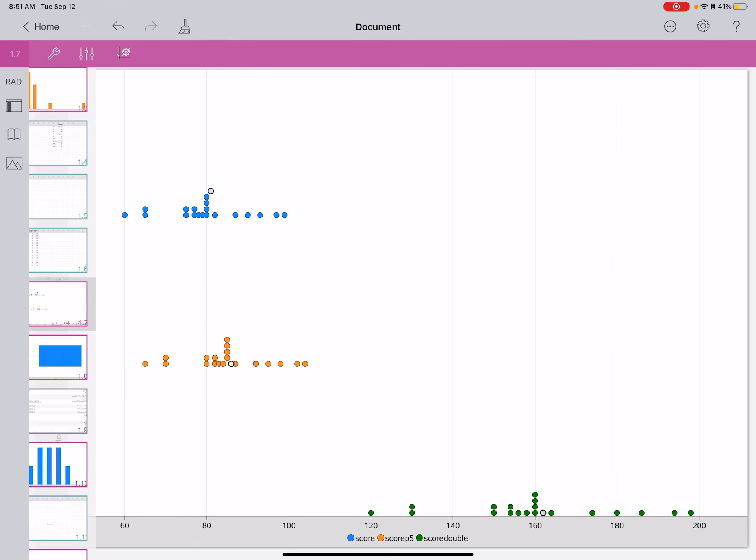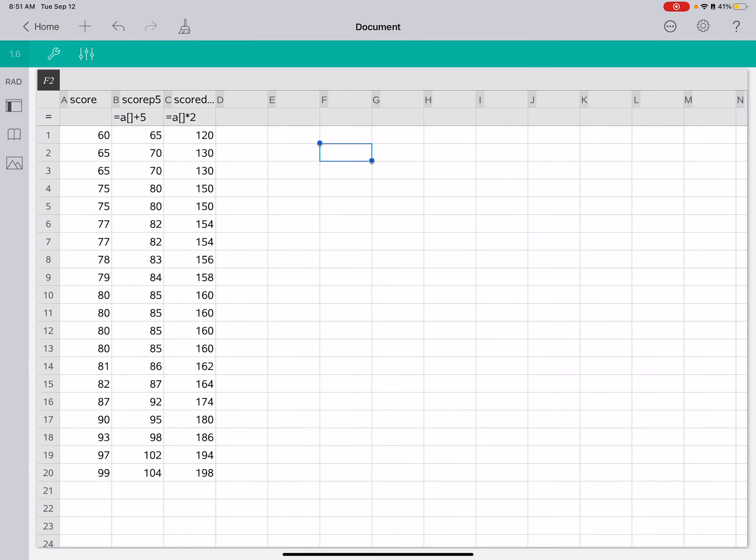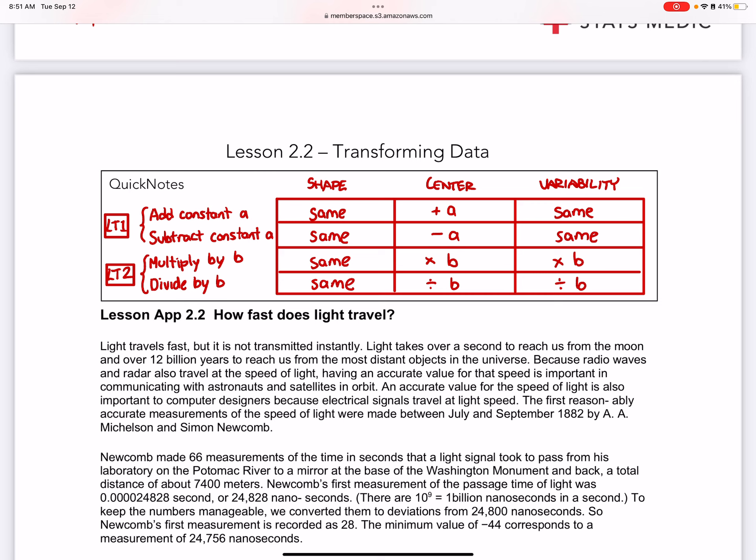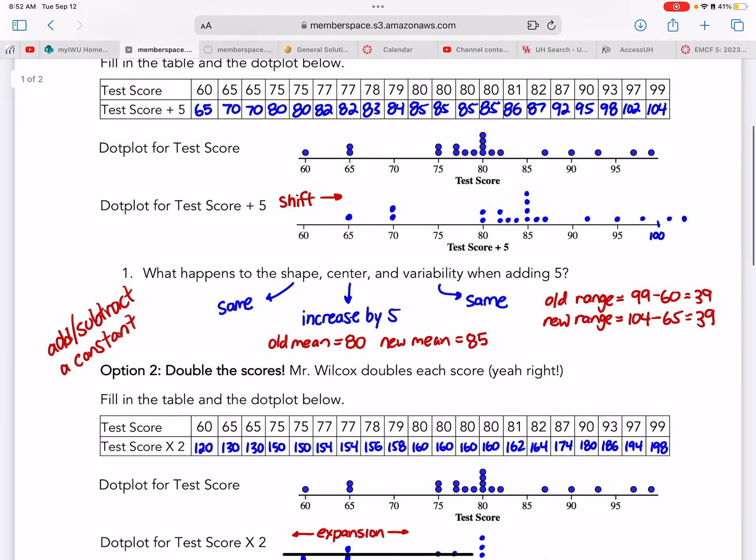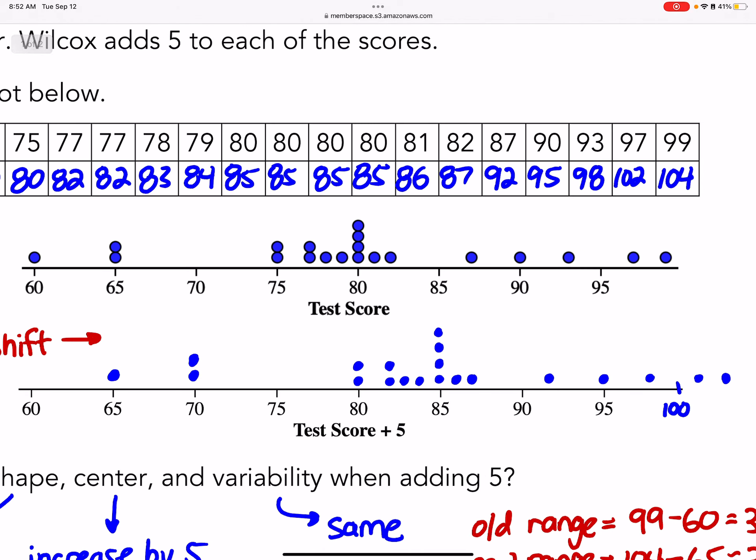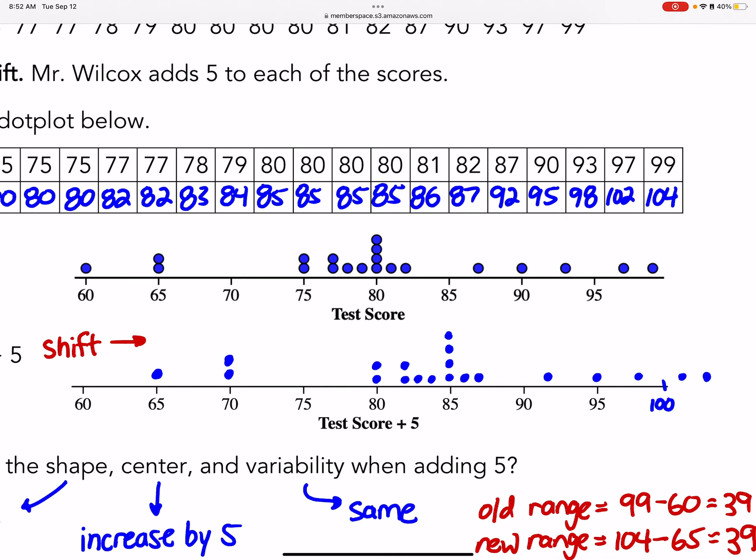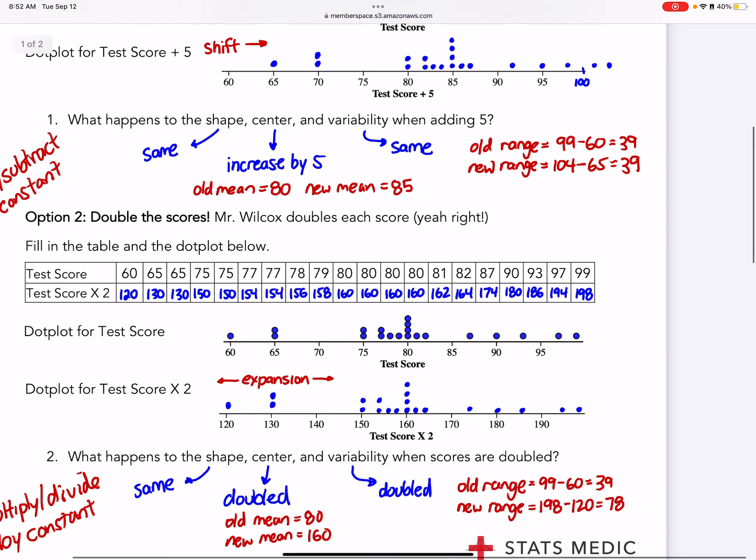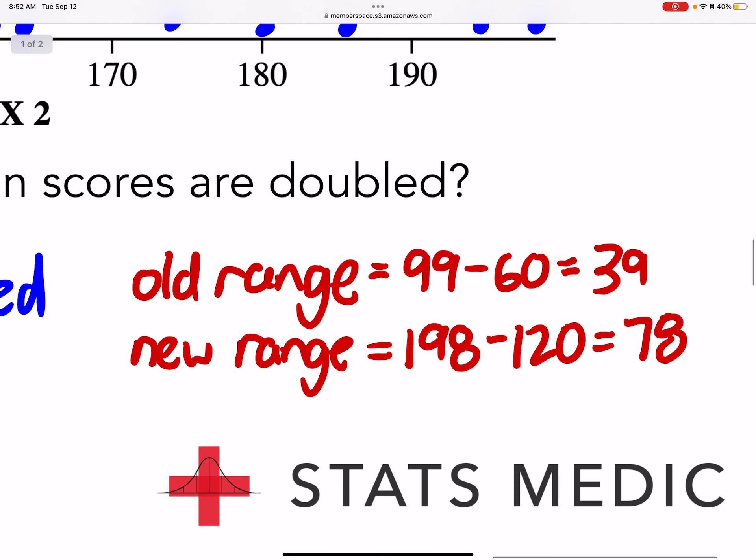The notes here show what happens to the shape, center, and spread. The variability is the spread, like the range. You can see the shape never changed. No matter what I did to the data, it didn't change. As I added to the center or subtracted, what happened was it just shifted. If I added, you can see that it just shifted to the right. That means that the range, which is the variability or the spread, didn't change because I just shifted it. So it's still 99 minus 60 and then 104 minus 65, which is exactly the same. The range did change in the new one when we doubled it. We had 99 minus 60 and now we have 198 minus 120, so that doubled it.